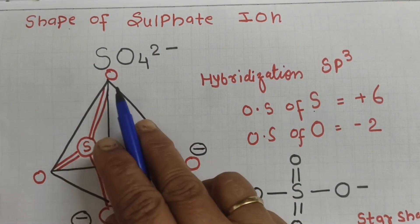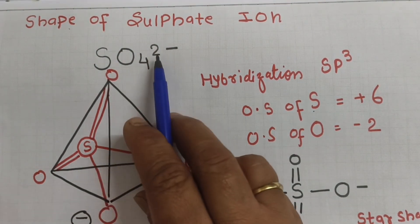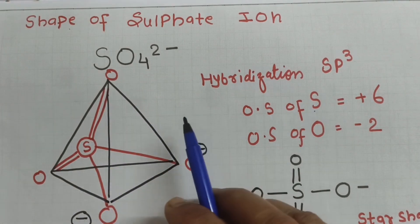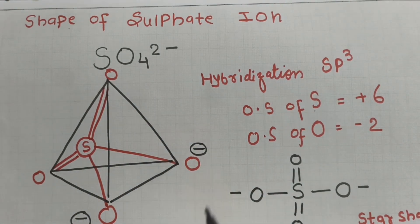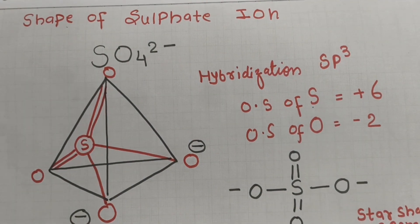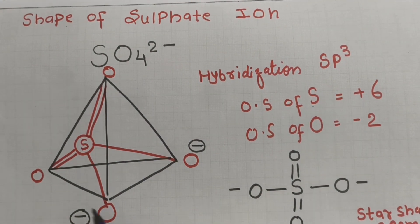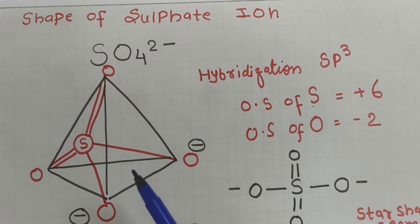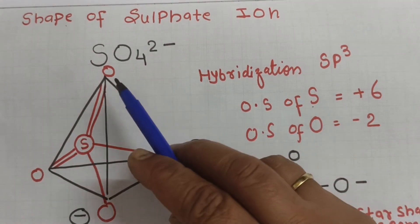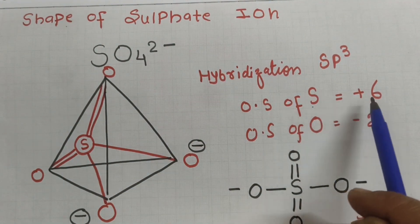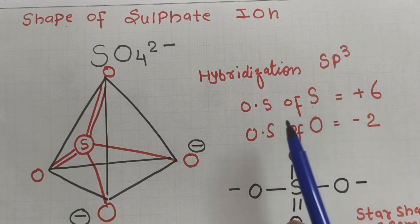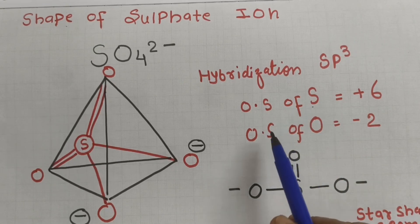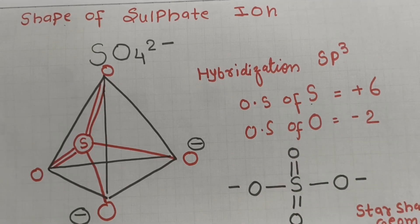We know that sulfate has the formula SO₄²⁻. Sulfate has a tetrahedral structure because it undergoes sp3 hybridization. In sulfate, the oxidation state of sulfur is +6 and the oxidation state of oxygen is -2.